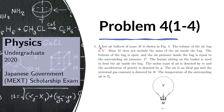Problem 4. A hot air balloon of mass M is shown in figure 4. The volume of the airbag is V. The mass M does not include the mass of the air inside the bag. The bottom of the airbag is open, and the air pressure inside the bag is equal to the surrounding air pressure P. The burner sitting on the basket is used to heat the air inside the bag. The molar mass of the air is denoted by lowercase m, and the acceleration of gravity is denoted by lowercase g.